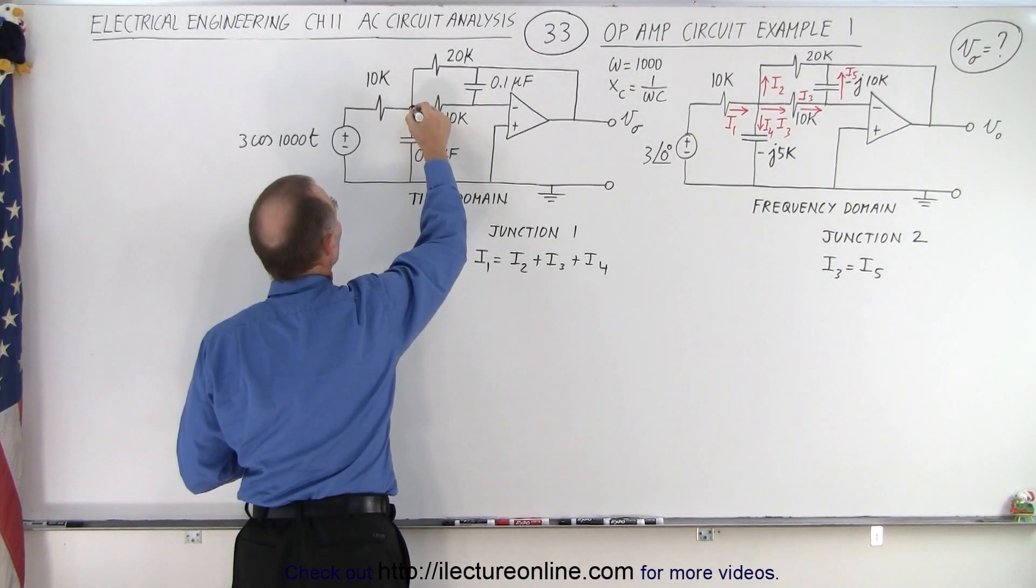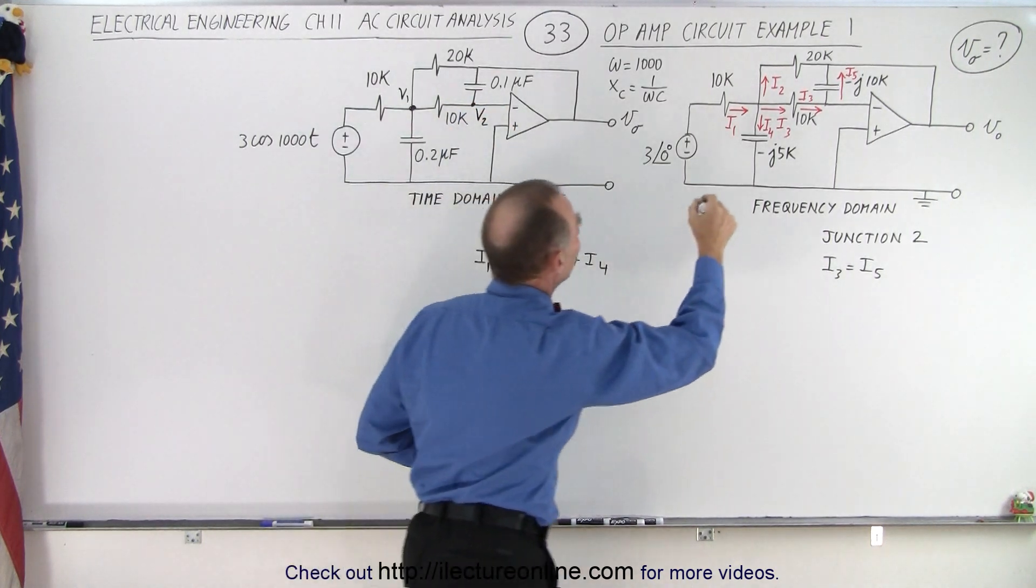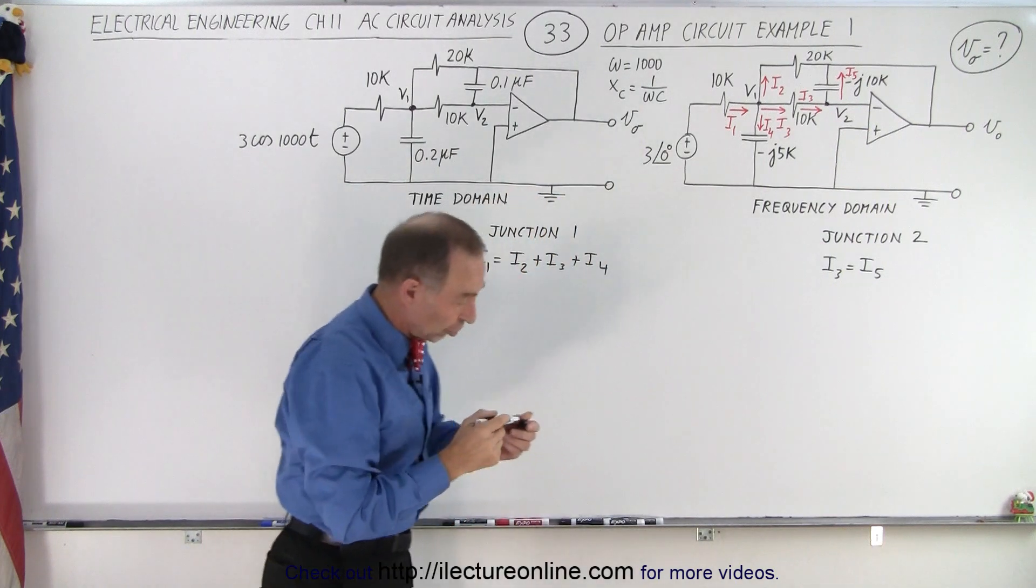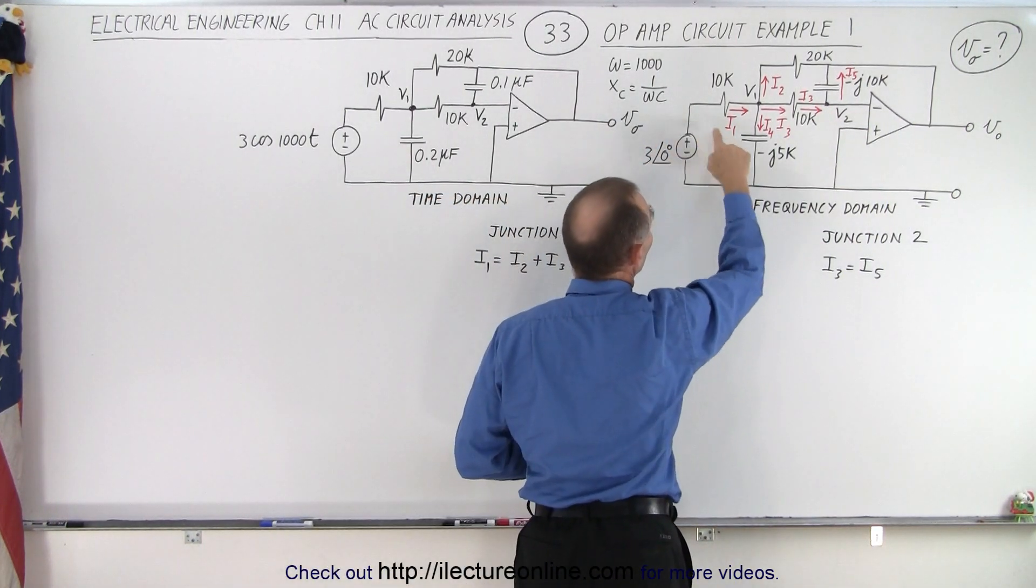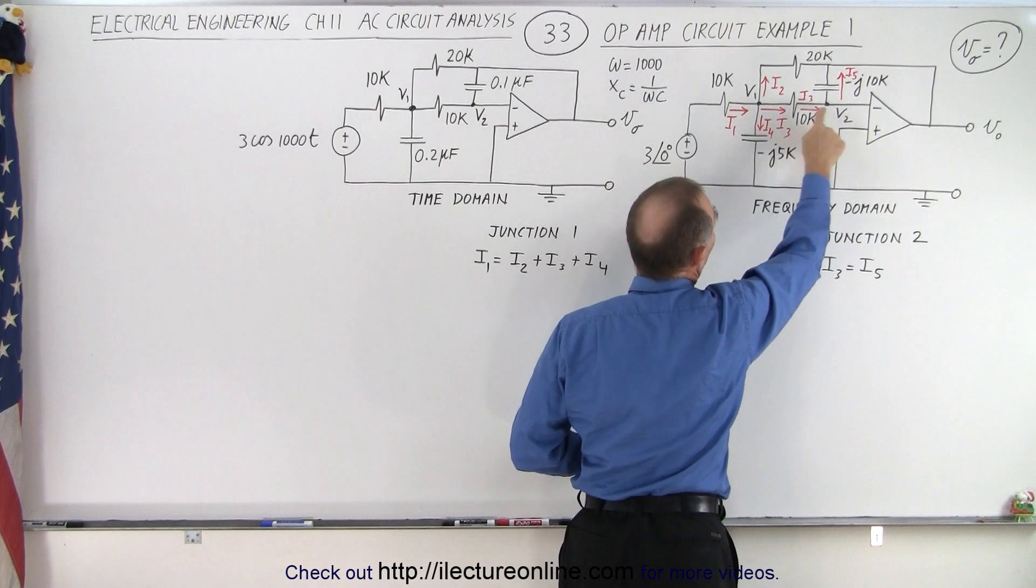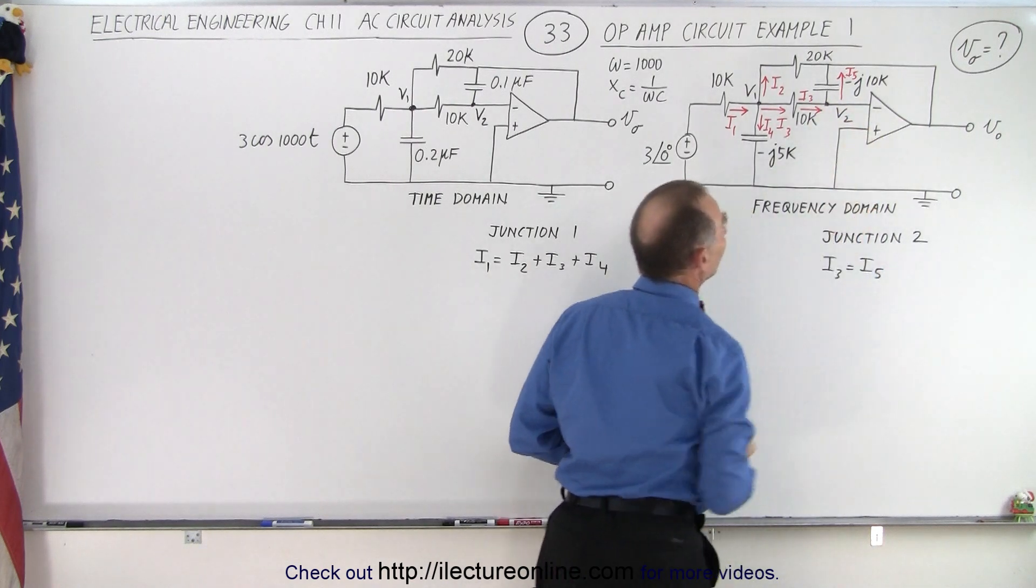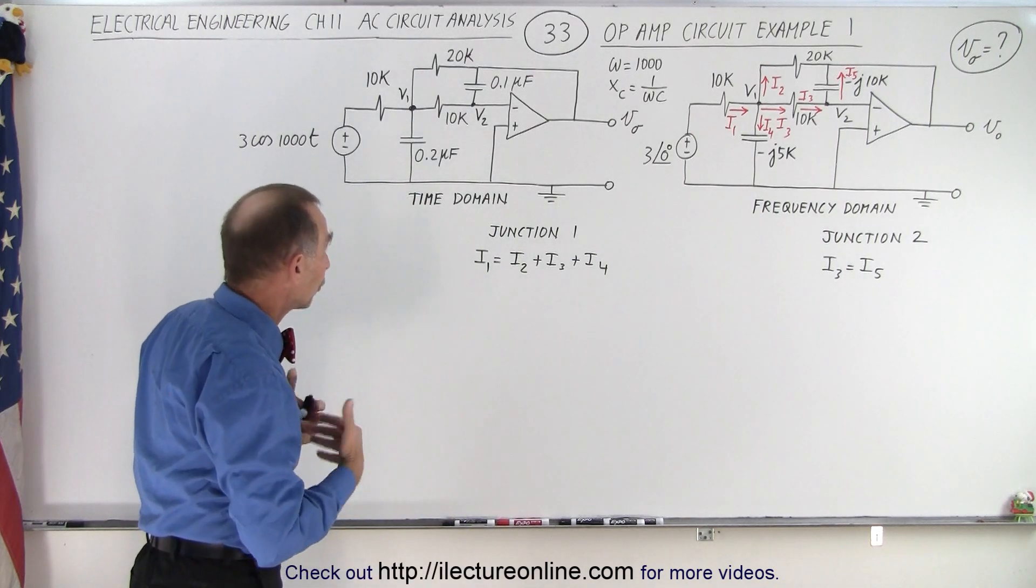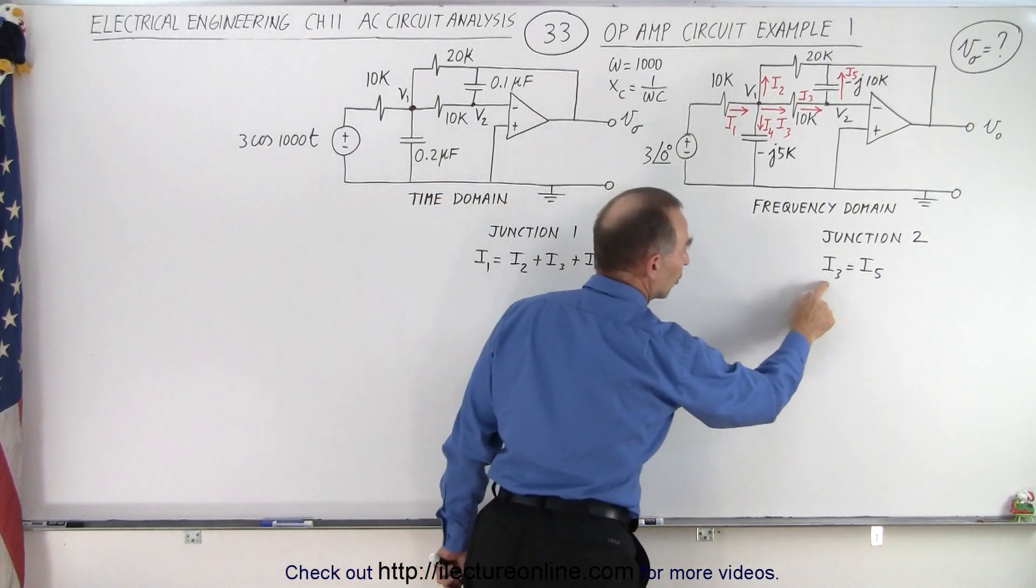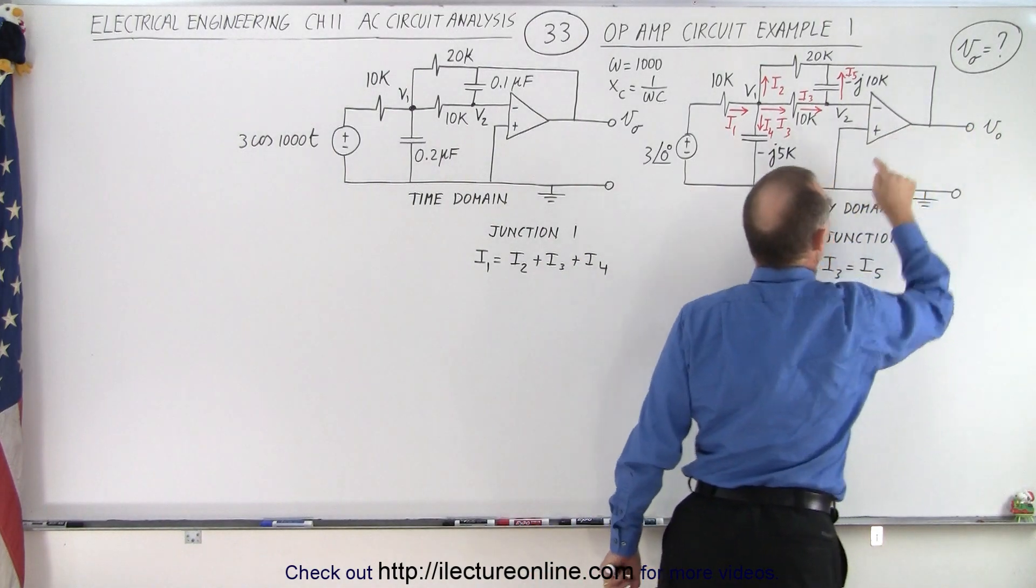Notice we have two main junctions. Let's say that the voltage at this point is V1, and the voltage at this point, call it V2. We'll do the same over here. Notice at those two junctions, on the first junction, we have one current going in from the source, we'll call that I1, and three currents leaving: I2, I3, and I4. On the second junction, we have I3 entering and I5 leaving through the capacitor. There's essentially no current in this branch, so we can simply call that zero current. So we're using the Kirchhoff current rules at every junction that the current entering the junction must equal the sum of the currents leaving. We're going to use that to come up with an equation to find ultimately the output voltage of the operational amplifier.